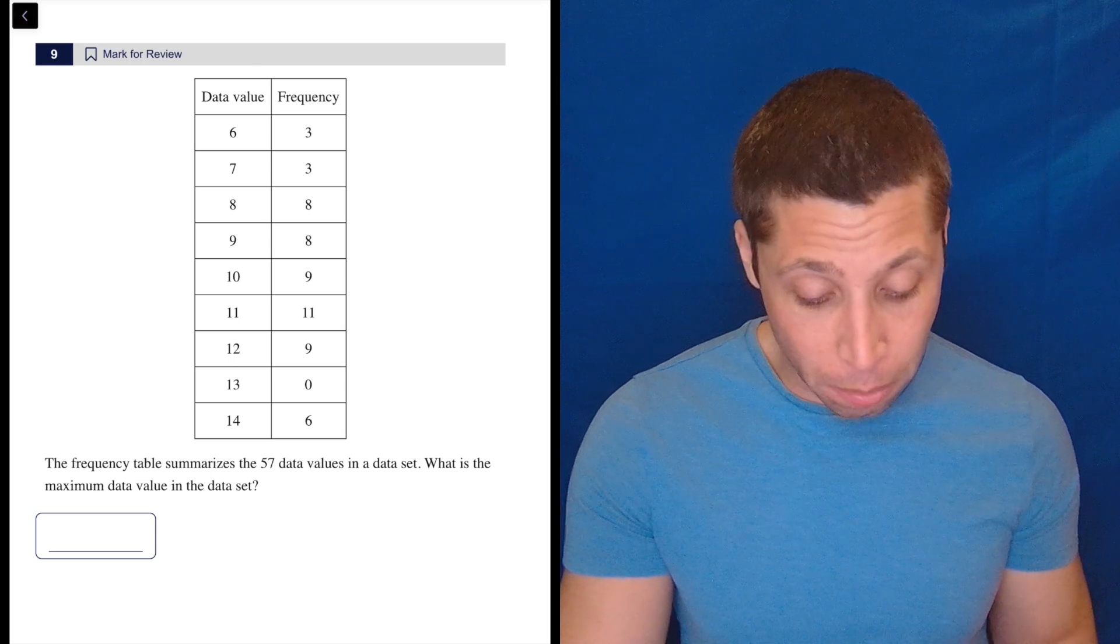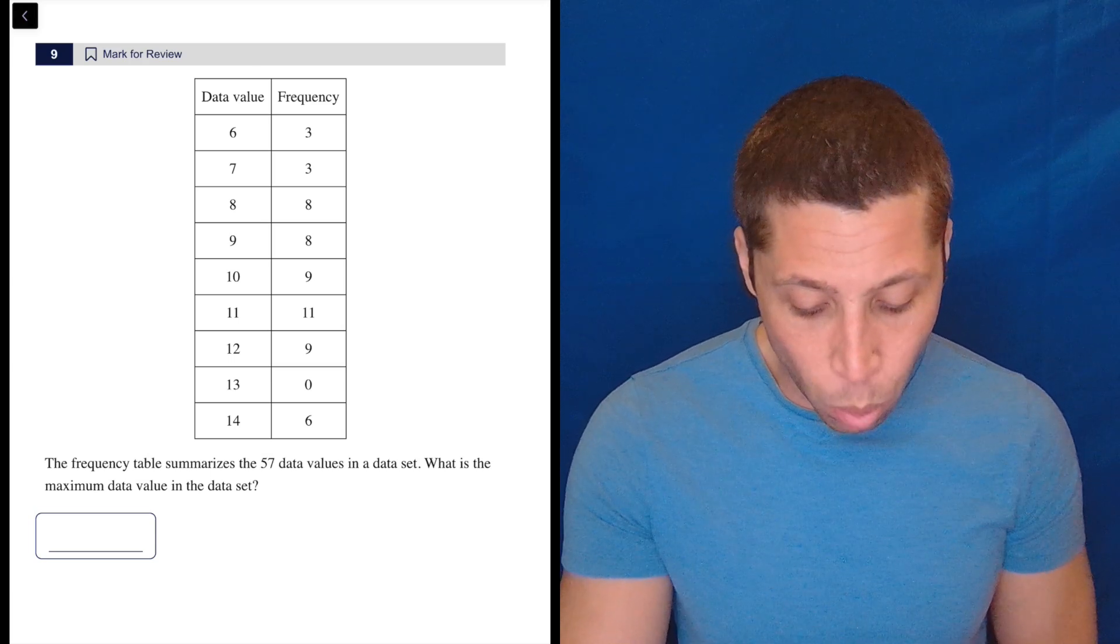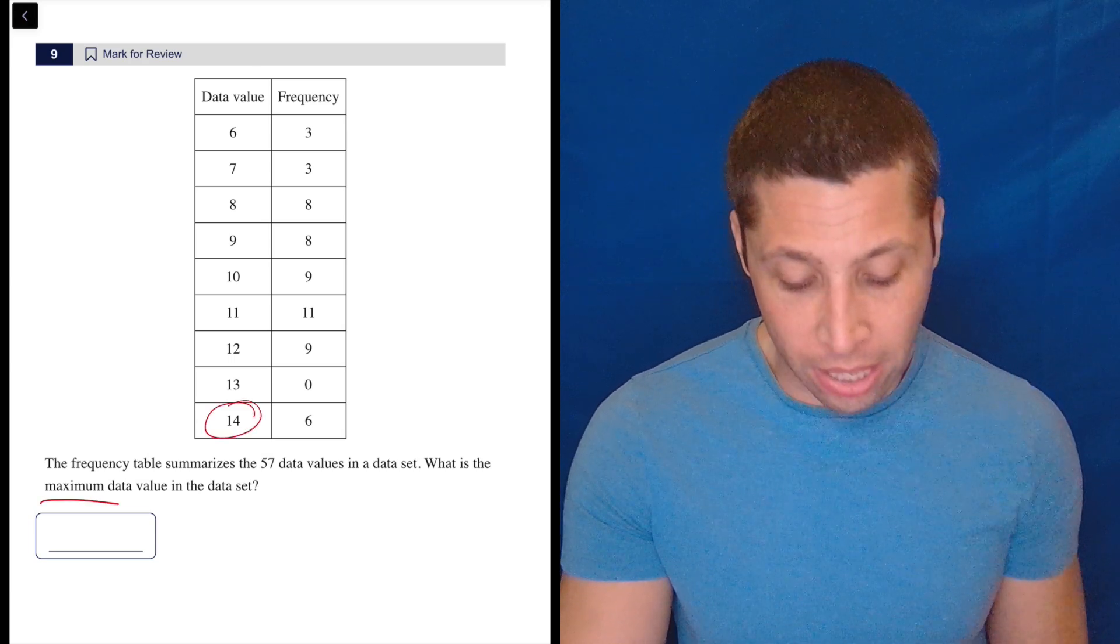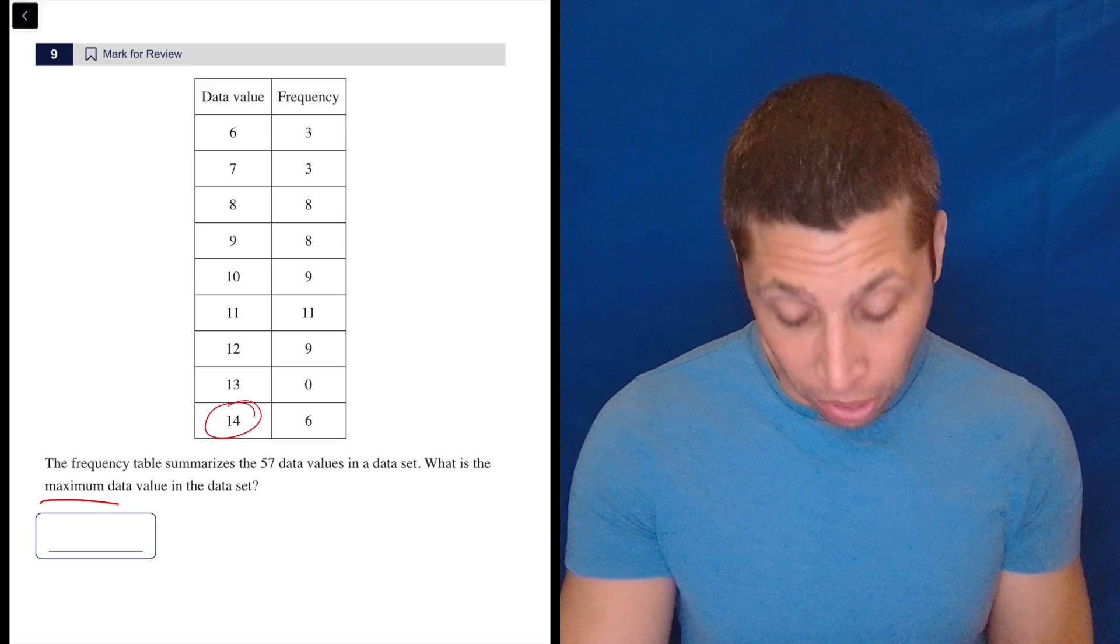The frequency table summarizes the 57 data values in your data set. What is the maximum data value in the data set? It's 14. That's it. That's the whole thing.